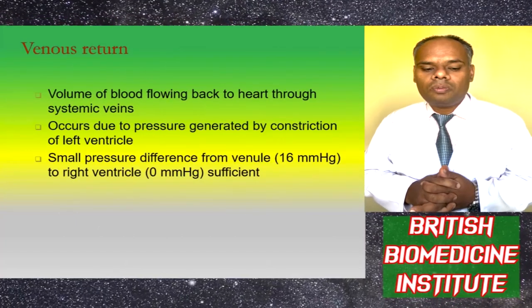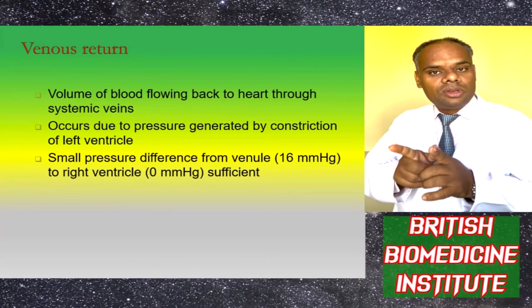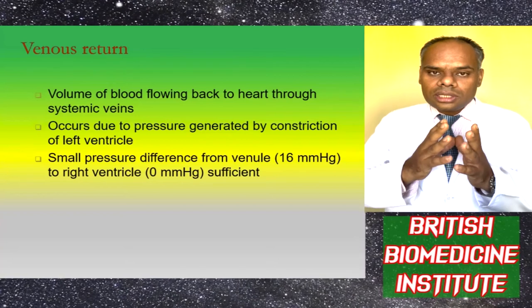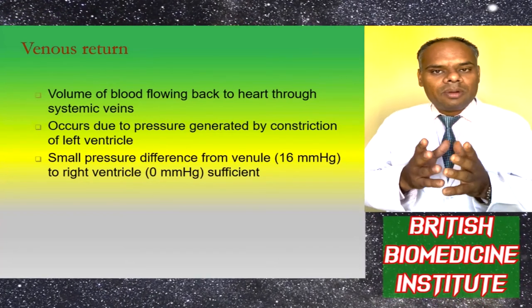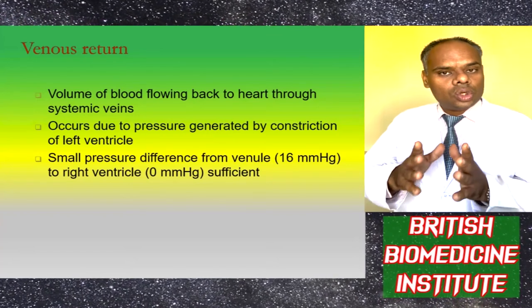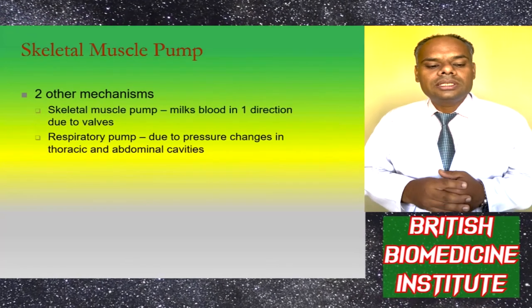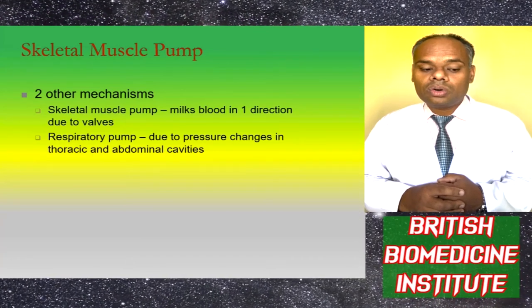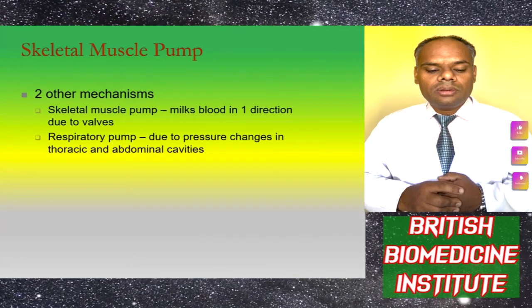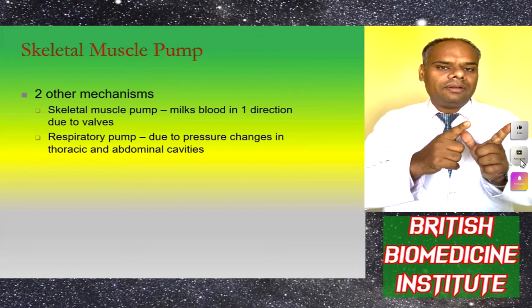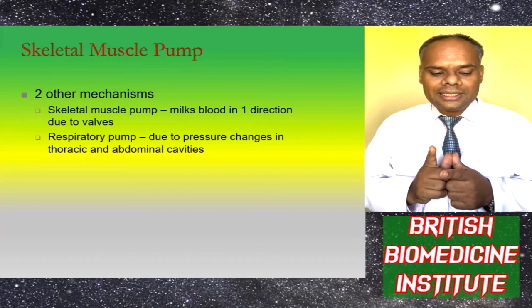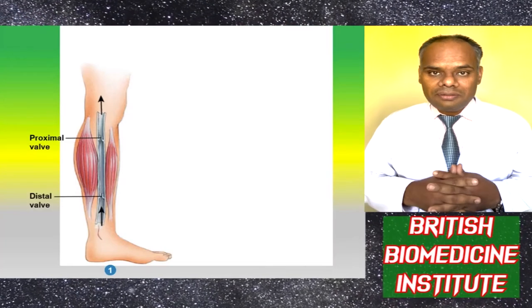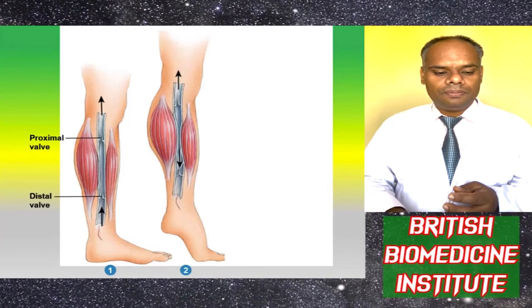Venous return is the volume of blood flowing back to the heart from the systemic veins. It occurs due to pressure generated by contraction of the left ventricle; a small pressure difference from venules (16 mmHg) to the right ventricle (0 mmHg) is sufficient. There are two mechanisms: the skeletal muscle pump, which milks blood in one direction due to valves; and the respiratory pump, which works due to pressure changes in the thoracic and abdominal cavities. A diagram shows proximal and distal valves through which blood flows.